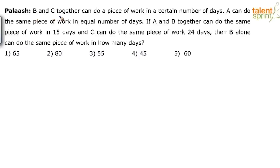B and C together can do a piece of work in a certain number of days, and A can do the same piece of work in an equal number of days. If A and B together can do the same piece of work in 15 days, and C can do the same piece of work in 24 days, then how many days will B alone take to do the same piece of work?